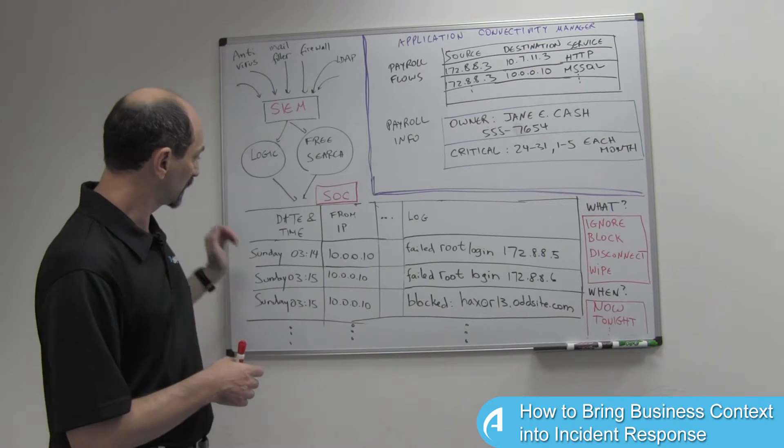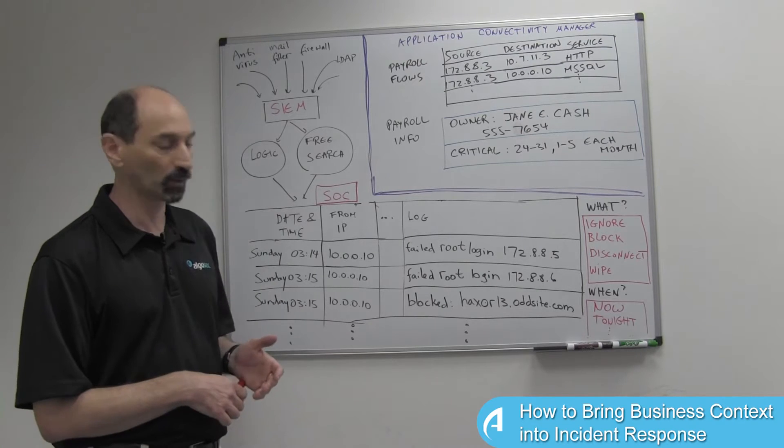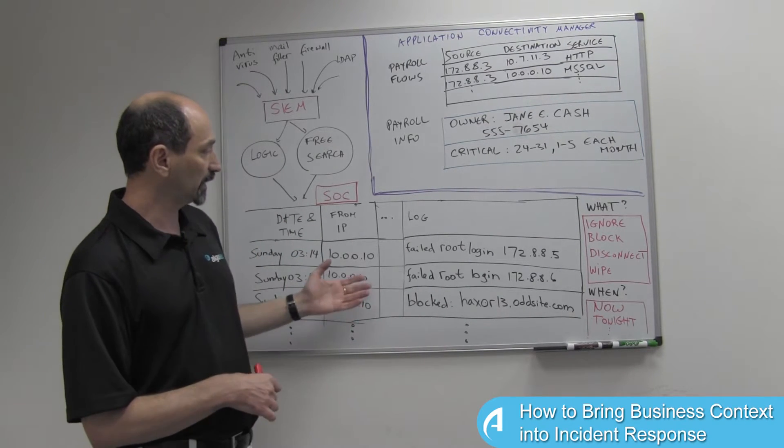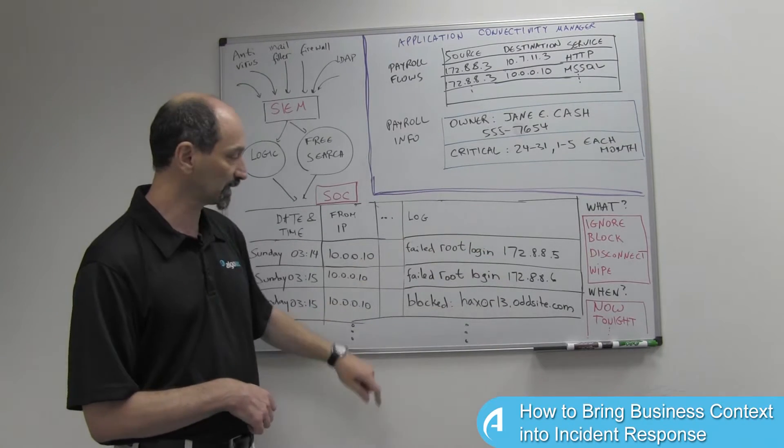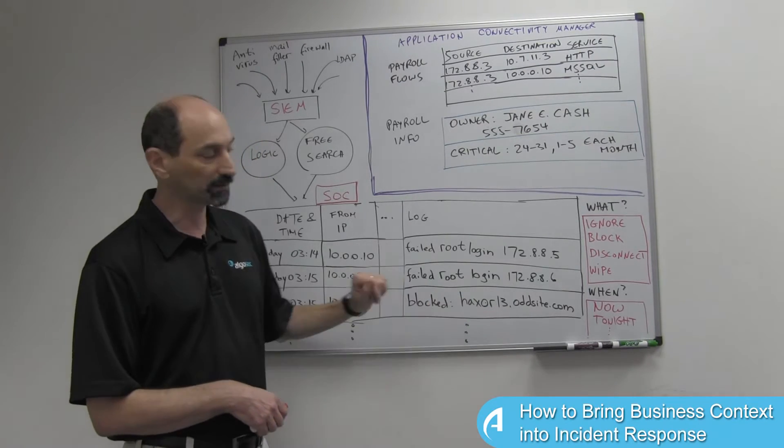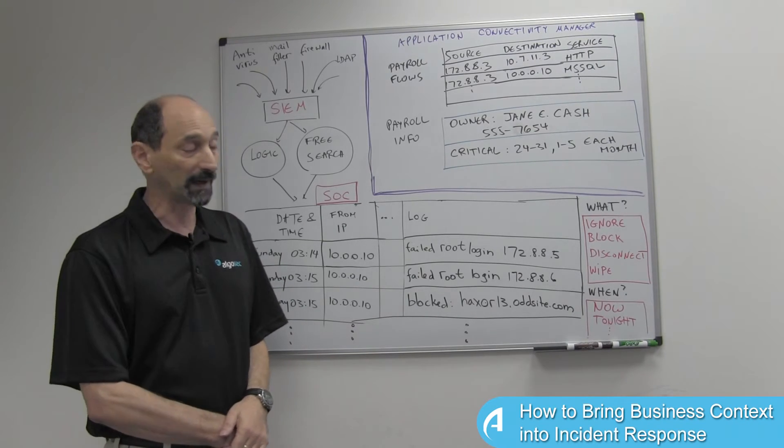Here we can see for instance activity at a strange time of the day, Sunday 3 o'clock in the morning. We can see that a particular IP address is generating failed login attempts, trying to connect to other systems, trying to access a blocked website, maybe other things. So all of these together seem to raise a red flag.